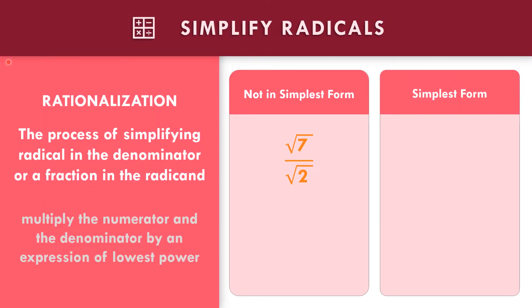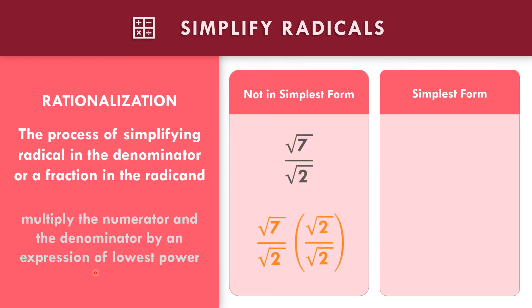In simplifying radicals, we need to use rationalization. Rationalization is the process of simplifying a radical in the denominator or a fraction in the radical. In this given expression, square root of 7 over square root of 2, we need to rationalize the denominator. To do so, we need to multiply the numerator and denominator by the expression of lowest power.